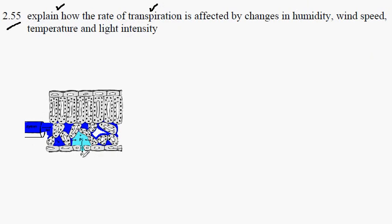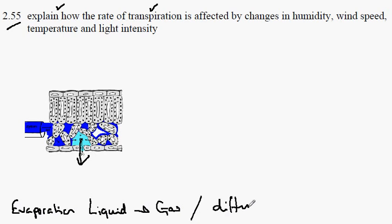If we return to transpiration, transpiration is the loss of water through the leaf. It's caused by evaporation. For this to occur, the water has to be changed from the liquid phase into the gas phase, and then there's the diffusion through the stomatal pore.